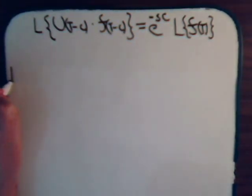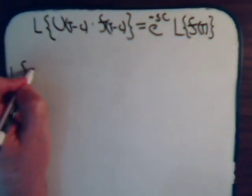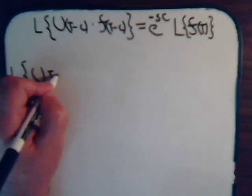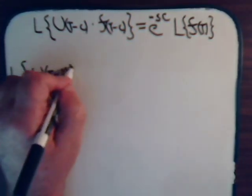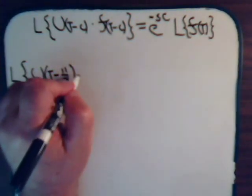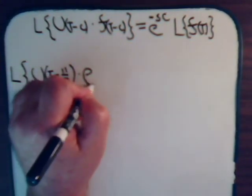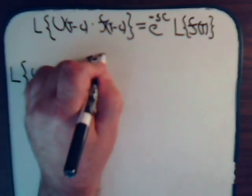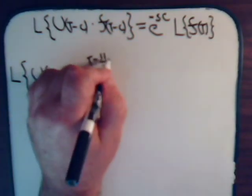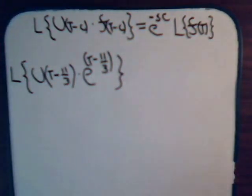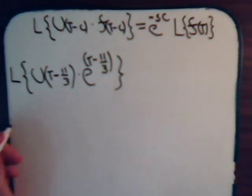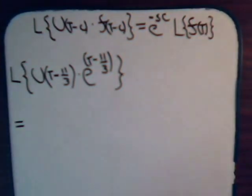Suppose we have the Laplace transform of u(t - 11/3) times e to the (t - 11/3). So that will equal, again, from this part of the expression,